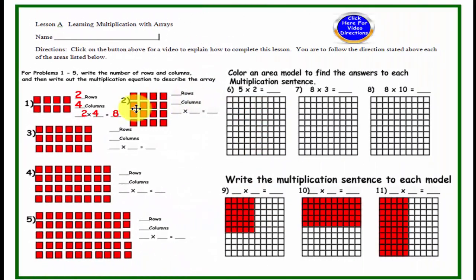Let's see how well we did. Problem number 2, we have 4 rows, 4 columns, and our sentence is 4 times 4 is equal to 16. Here is row 1, 2, 3, 4, column 1, 2, 3, 4.